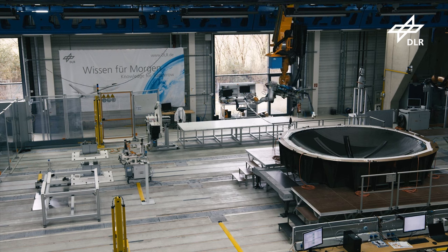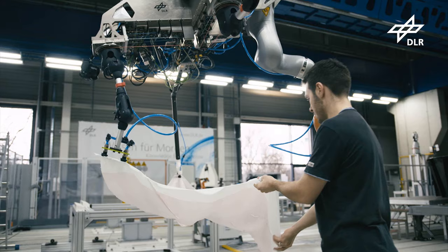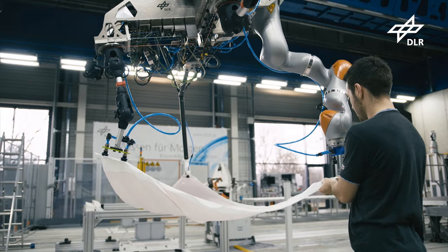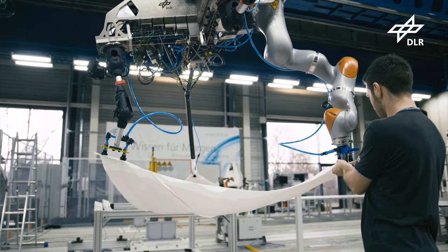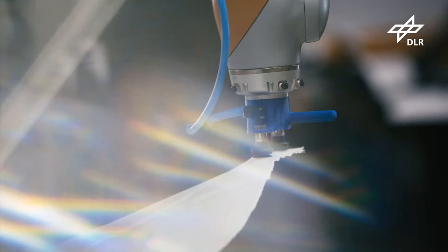The collision-free robot paths are programmed and simulated offline. The manual loading of the auxiliary materials allows final quality check.